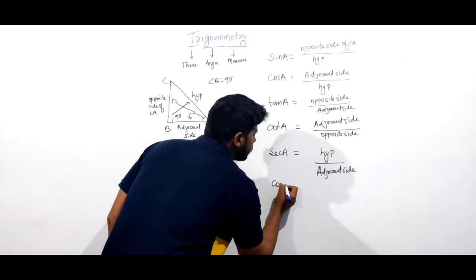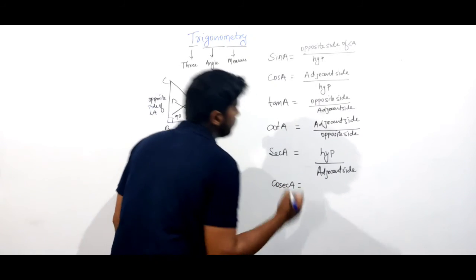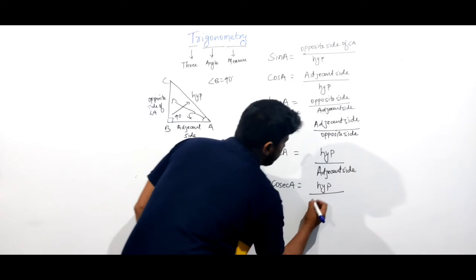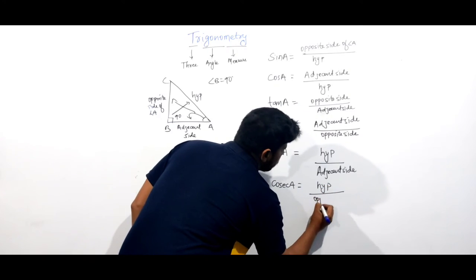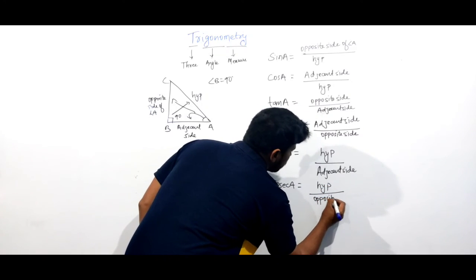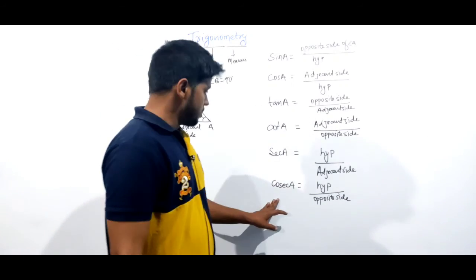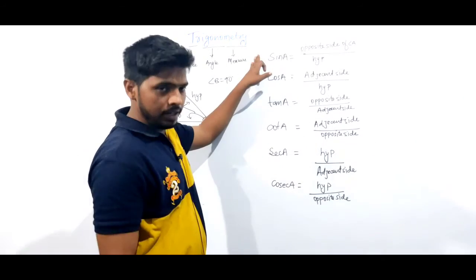And cosec A is equal to hypotenuse by opposite side. It is just the reciprocal of sin A.